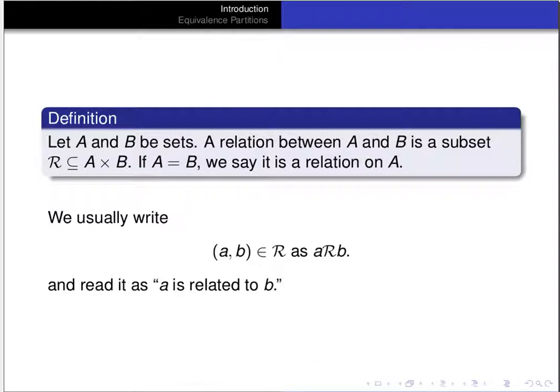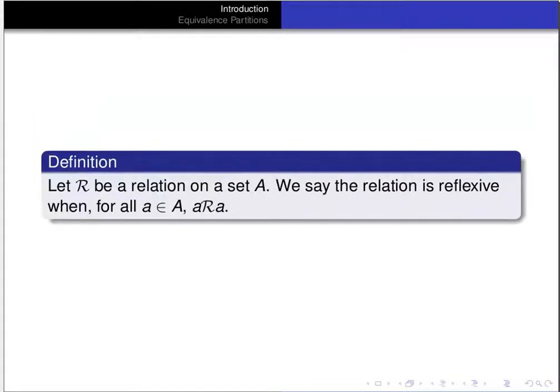Or in the case of equivalence relations, we'll say a is equivalent to b. Now let's say R is a relation on a set A. The relation is reflexive when for every element a of the set A, a is related to a. So a relation is reflexive if everything in the underlying set is related to itself.